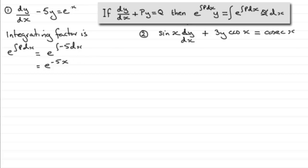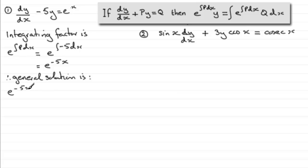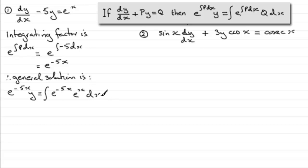That means that the general solution — putting in our values — we've got e to the integral of p dx. So the general solution is e to the minus 5x multiplied by y, and this is equal to the integral of the integrating factor e to the power minus 5x, multiplied by q. q is e to the power x in this example, and we integrate all of this with respect to x.